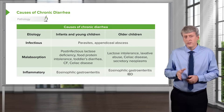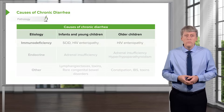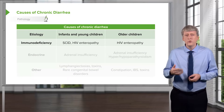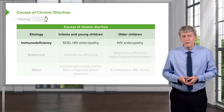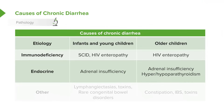Additionally, you may see children with immunodeficiency — things like severe combined immune deficiency or HIV — who will usually get other infections as well. Adrenal insufficiency can cause chronic diarrhea, as can hyper- or hypoparathyroidism, so endocrinopathies are also a cause. Rare things like lymphangiectasis, toxin exposure, and congenital bowel disorders are possible. In older children, constipation causing encopresis — liquid stool squirting around a hard ball of stool — can appear as diarrhea. Irritable bowel syndrome also starts to happen in older children.